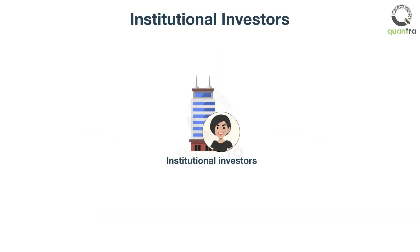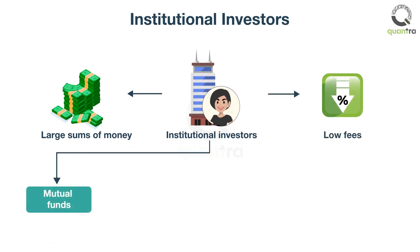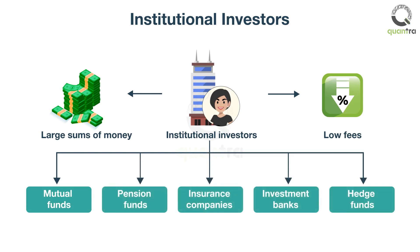Institutional investors are highly knowledgeable professionals or firms who invest a large sum of money in the financial markets. The money that they use is usually not their own — they invest other people's money on their behalf. Due to their large transactions, they often qualify for preferential services and lower fees. They can be mutual funds, pension funds, insurance companies, investment banks, hedge funds and so on.